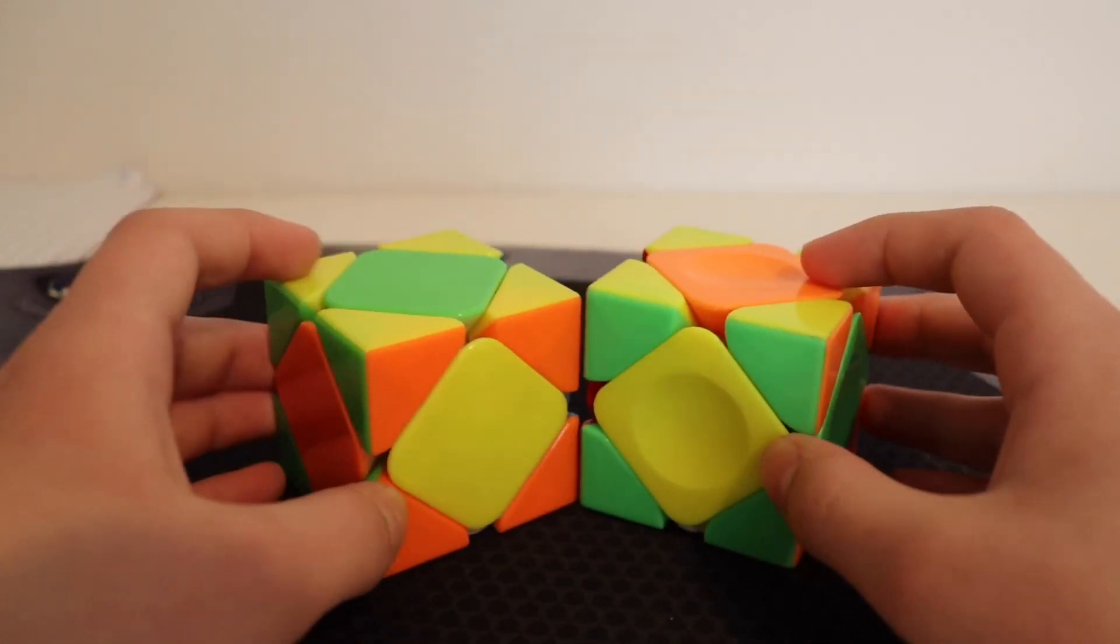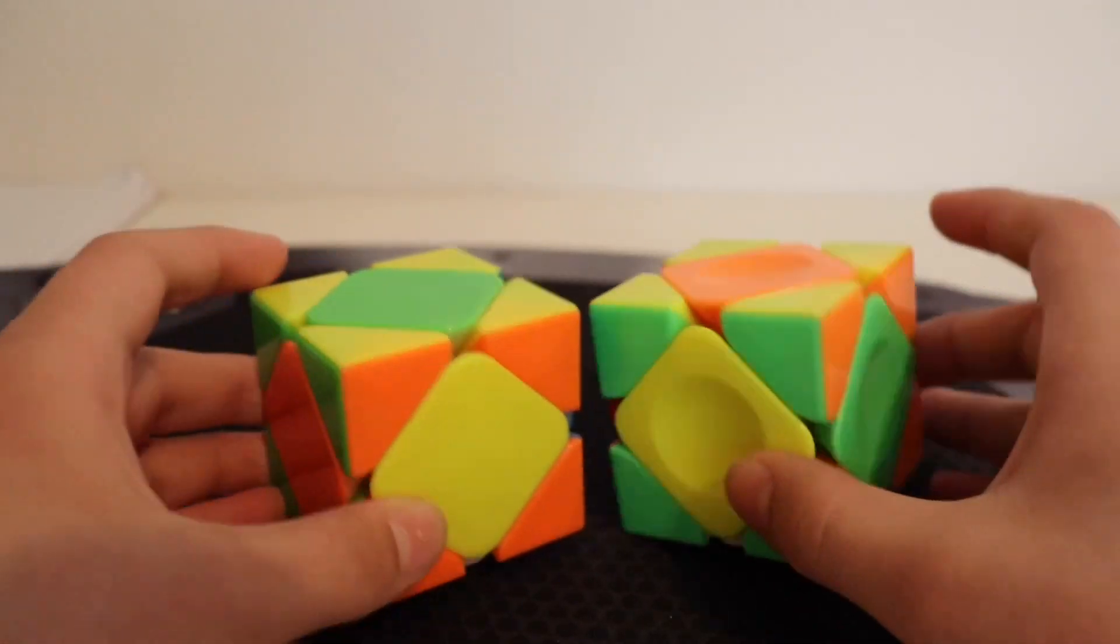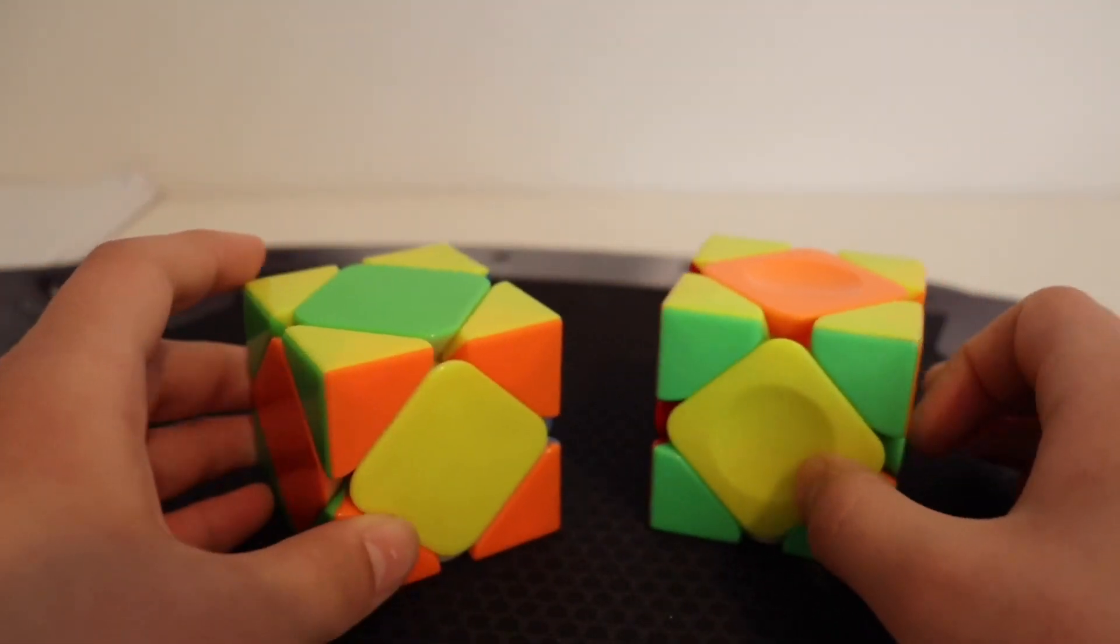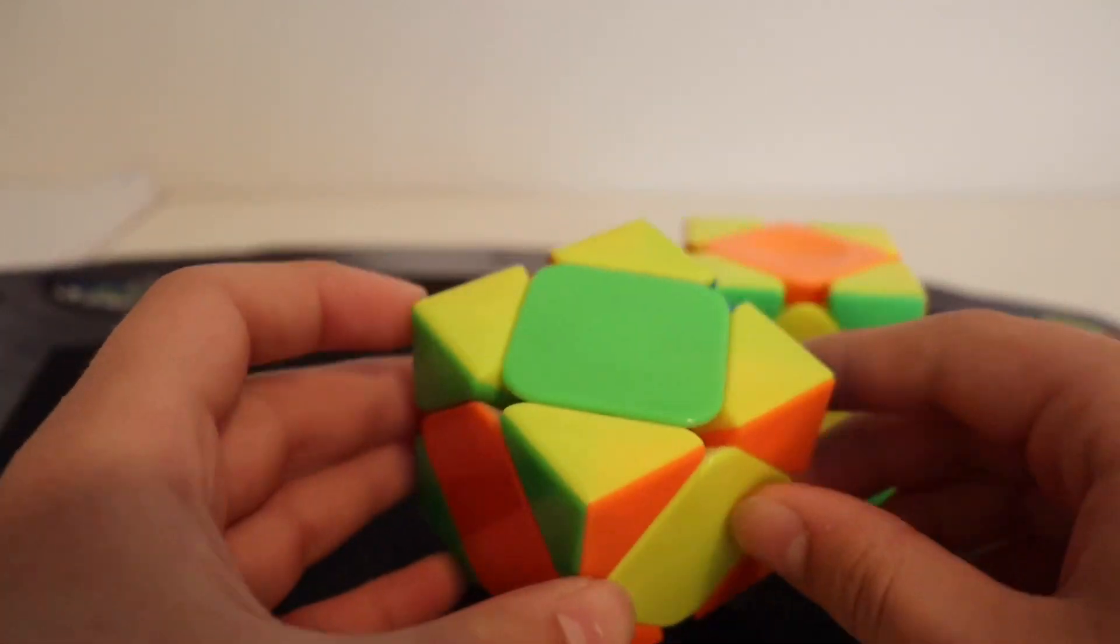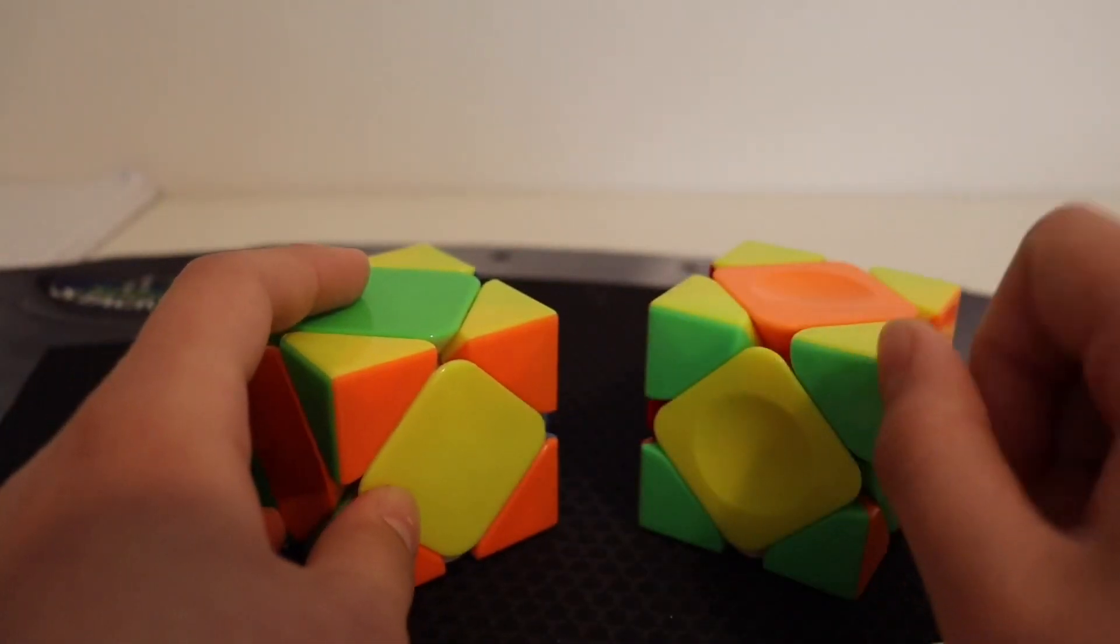Okay, moving on, we have more difficult cases now. These are called O-perms, and there's two of them, so I'll show you how to do them. There's a simple way to remember them. There's one that goes counterclockwise, and the one that goes clockwise.